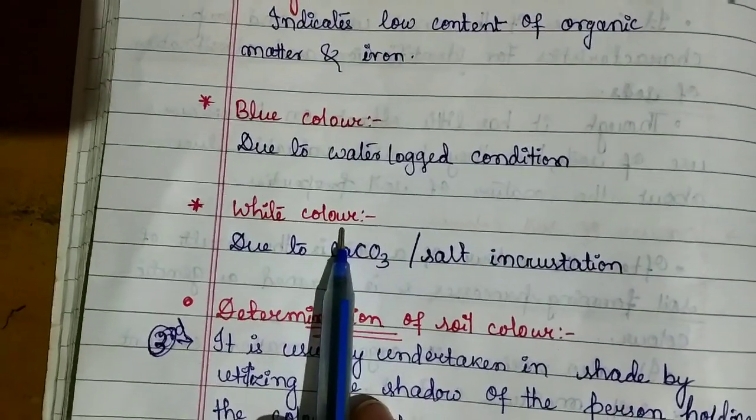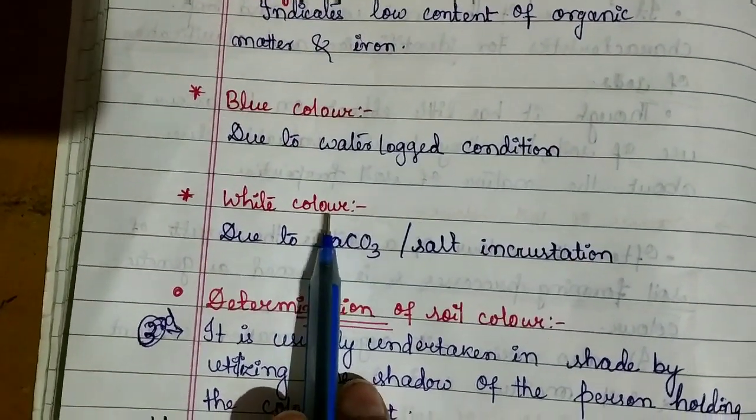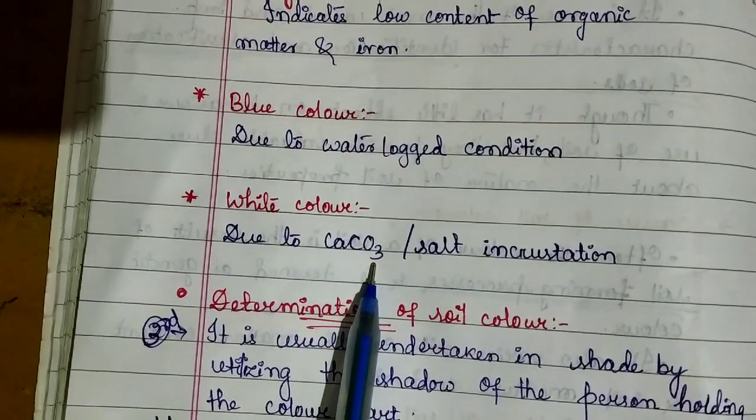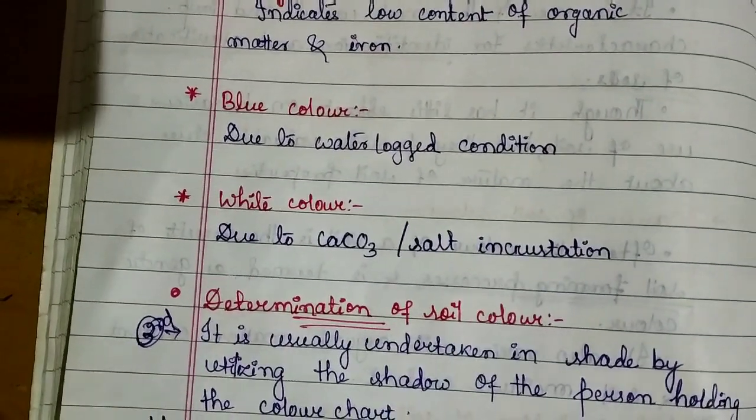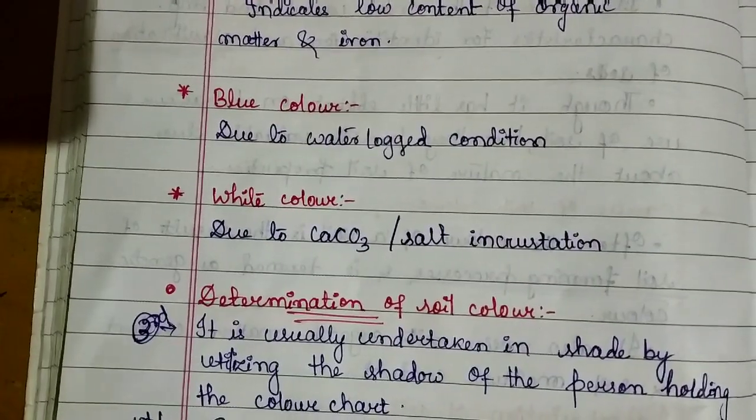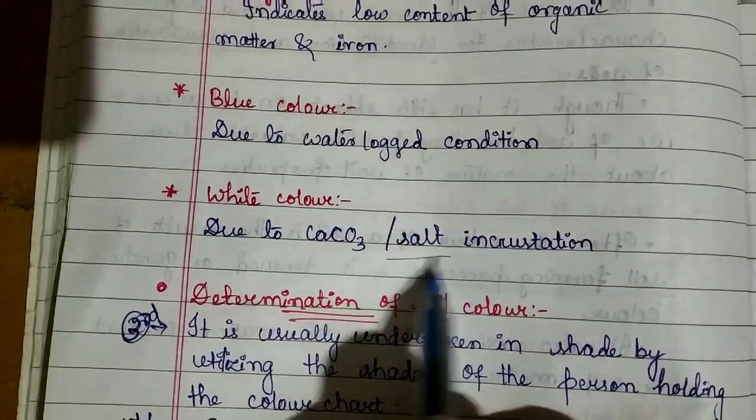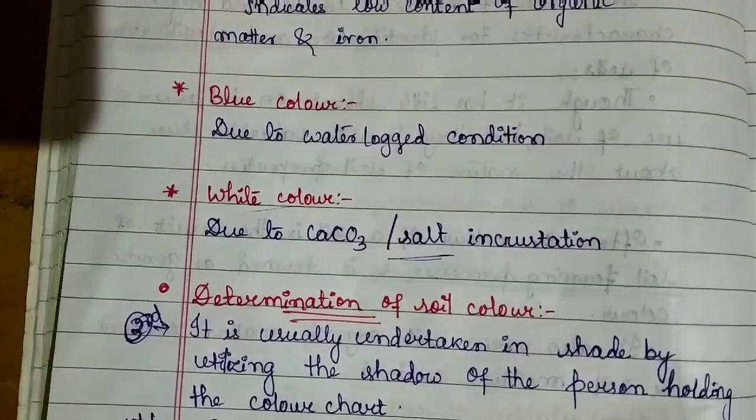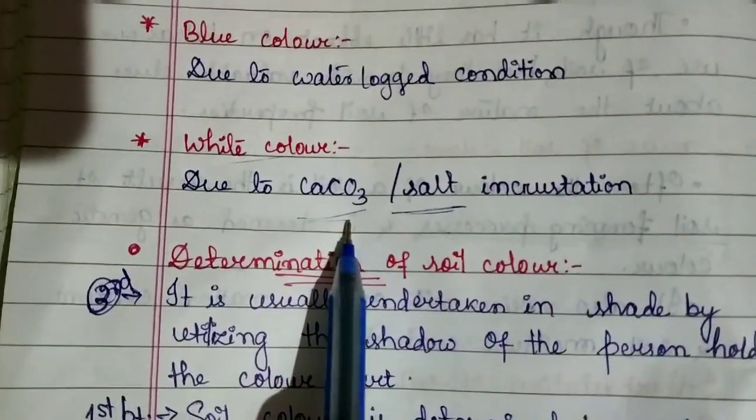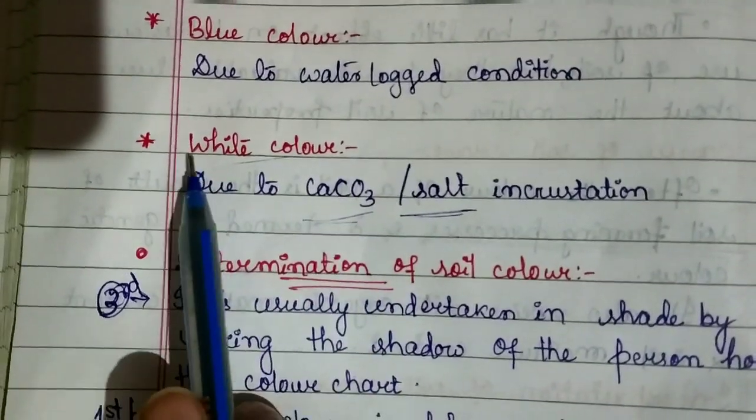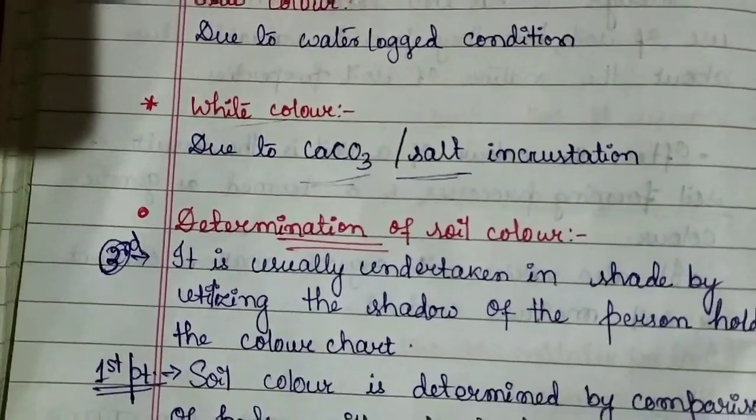White color is mainly due to calcium carbonate or salt incrustation. When there is a salt layer on the soil surface or calcium carbonate present, the soil appears white in color.